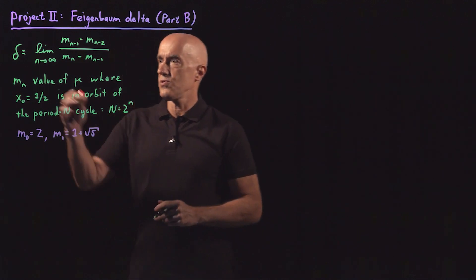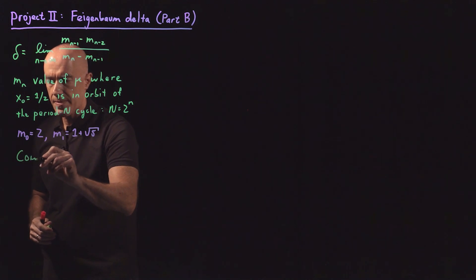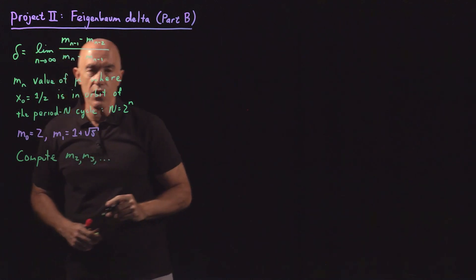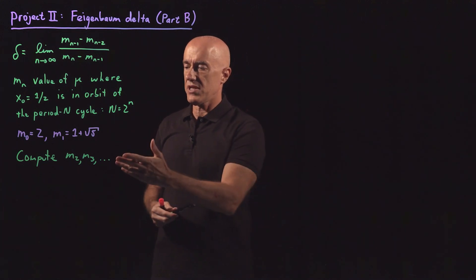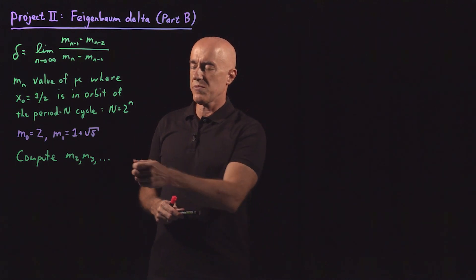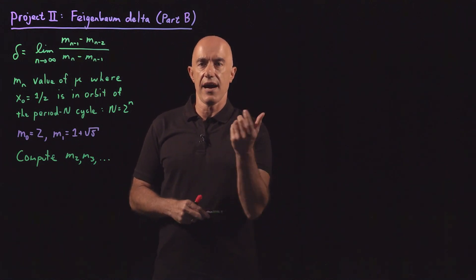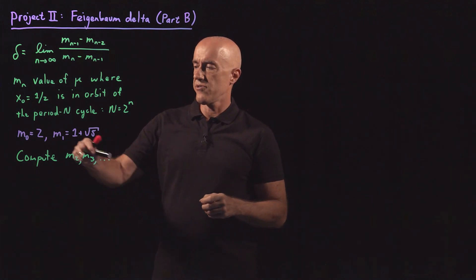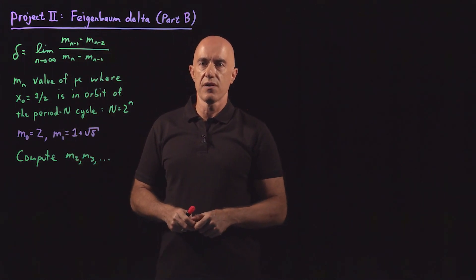We only have two numbers here and we want to keep computing these numbers. So we need to compute m sub 2, m sub 3, and go as high in index as we possibly can. Eventually, we're going to be stopped not by the runtime of the computer, but by round off error. It's interesting to see how the representation of numbers in the computer is going to prevent us from computing the Feigenbaum delta to an unlimited number of decimal places.